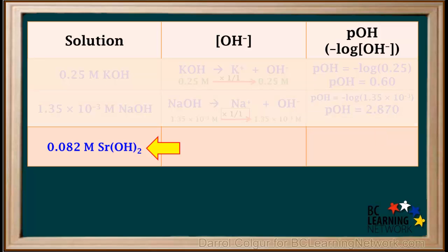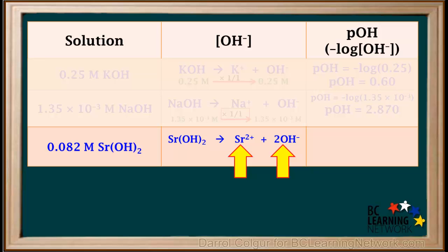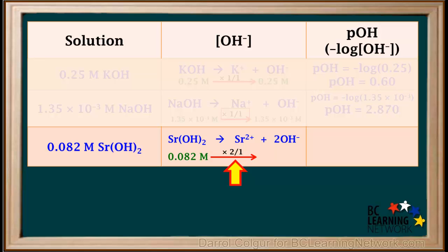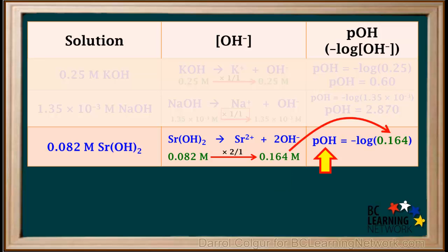Lastly, we'll look at the Sr(OH)₂ solution. Strontium hydroxide is a soluble strong base, which completely dissociates into one Sr²⁺ ion and two OH⁻ ions. The concentration of Sr(OH)₂ as a whole is 0.082 molar. The coefficients in the dissociation equation tell us that the mole ratio of hydroxide to Sr(OH)₂ is 2 to 1. So the concentration of hydroxide is 2 × 0.082, which is 0.164 molar. We'll use this value and save the rounding until the last step. The pOH is the negative log of 0.164, which rounded to two significant figures comes out to 0.79. We rounded this to two significant figures because 0.082 molar had two significant figures.